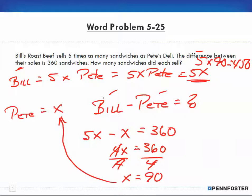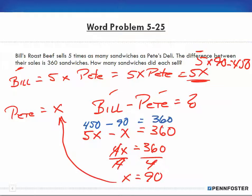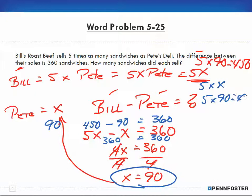To prove ourselves, we're going to plug in 450 minus 90. That's Bill minus Pete, and that equals 360. So 360 equals 360. We know that x being 90, which is how many Pete sold, is correct, and 5 times 90 is 450, which is how many Bill sold. We know it's correct because it proves itself out.